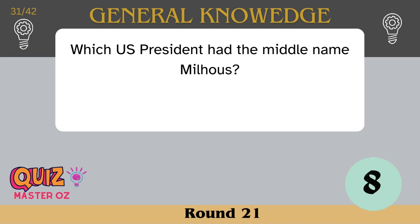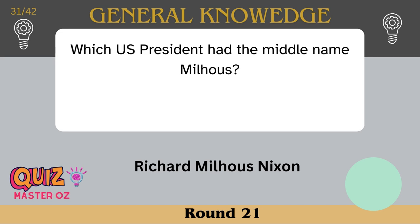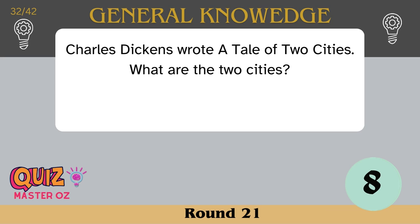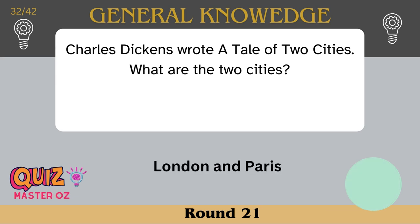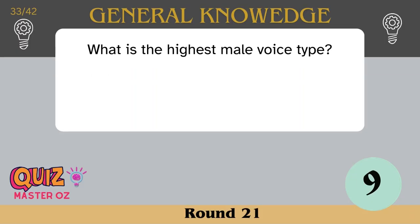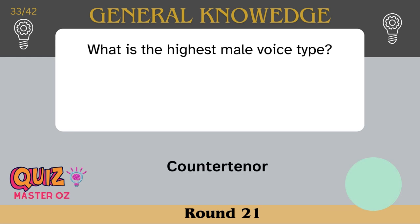Which US president had the middle name Milhouse? Richard Milhouse Nixon. Charles Dickens wrote A Tale of Two Cities — what are the two cities? London and Paris. What is the highest male voice type? A counter tenor.